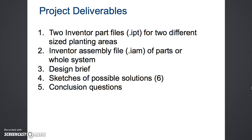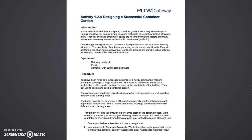Here is the project document titled 'Activity 1.2.4: Designing a Successful Container Garden.' It has an introduction and describes the equipment as well as the procedure. In the procedure, some criteria are listed. The second section states the container garden design should include a water drainage system and at least two different sized planting areas.